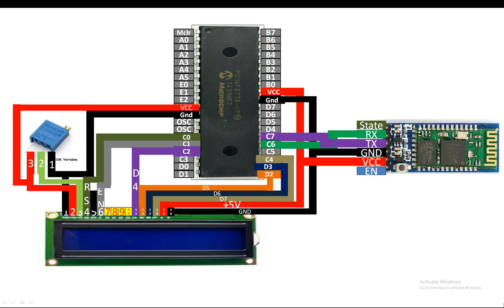Our system works like this: we write a word on the mobile phone, then write a delimiter so the PIC knows that once these characters are received it should read whatever came before it. I'll show how the delimiter works in the programming. The data comes to the HC05, which sends it to the PIC, the PIC decodes it and displays it on the 16x2 LCD.